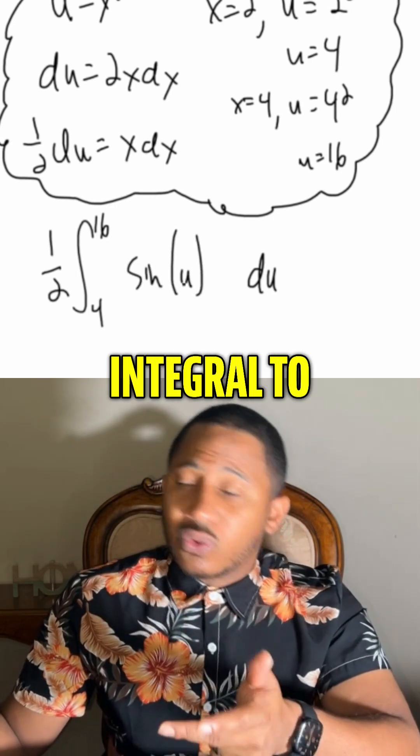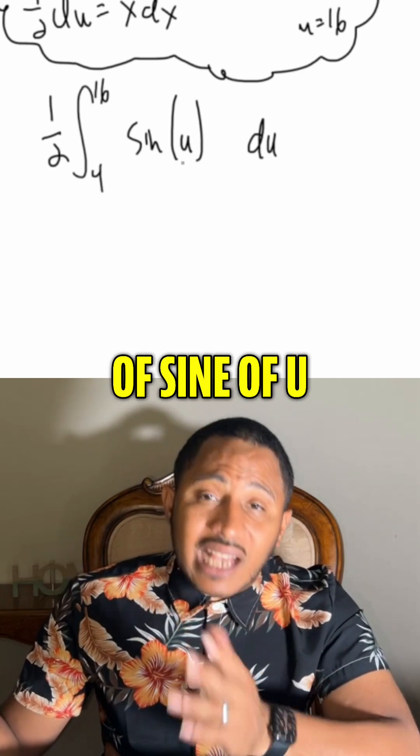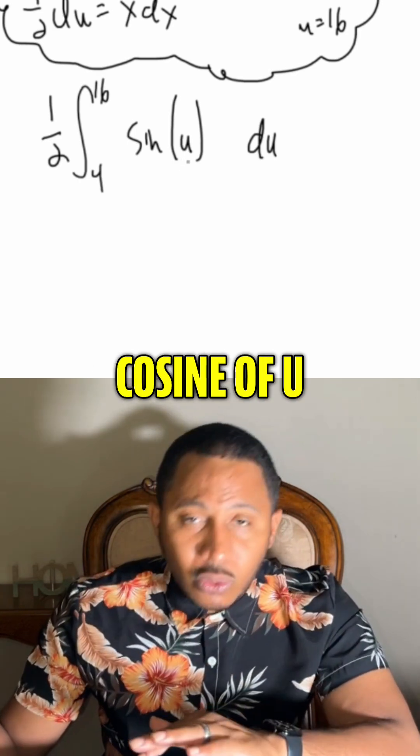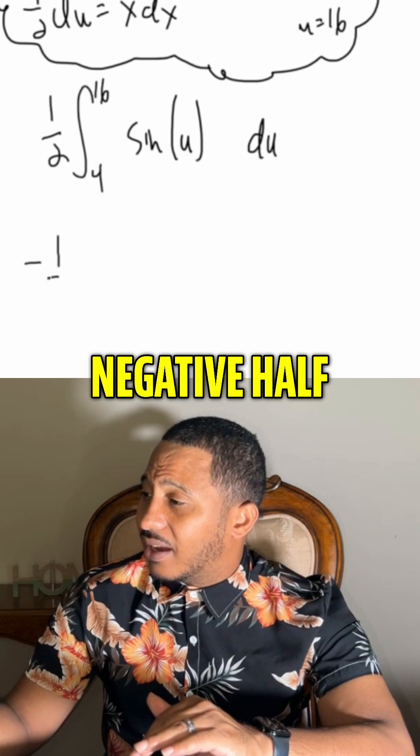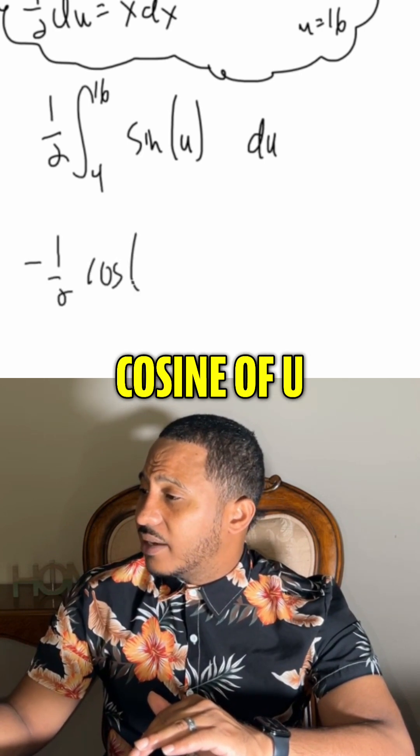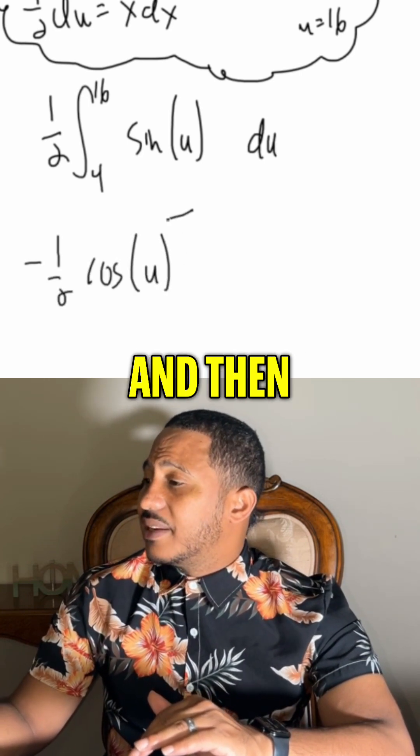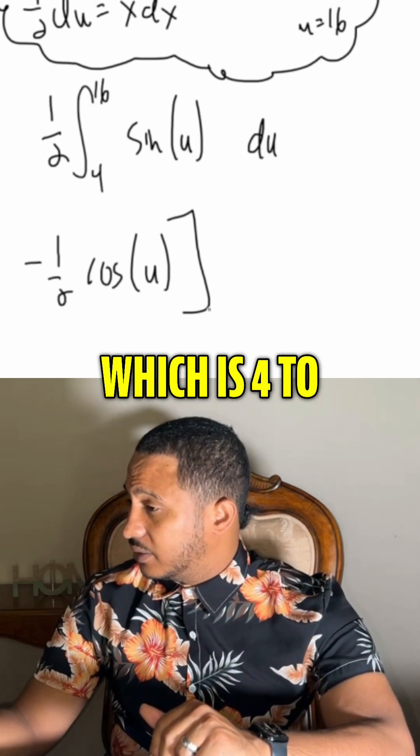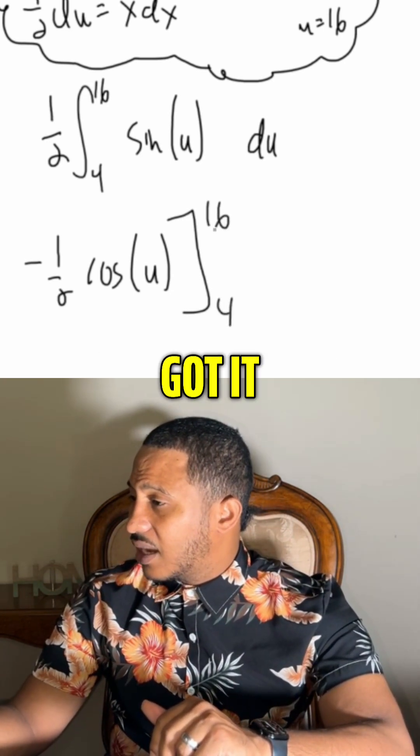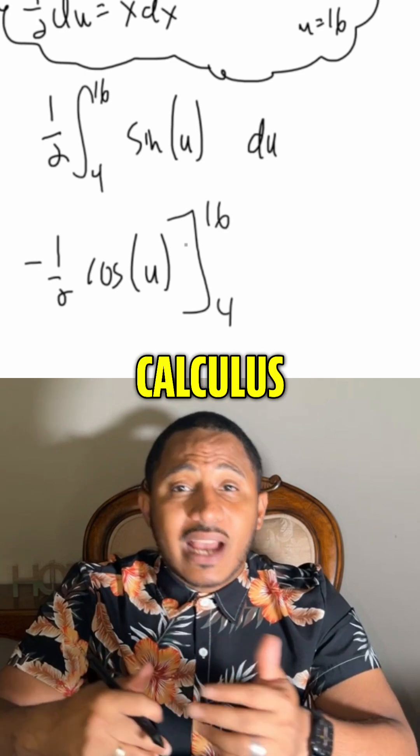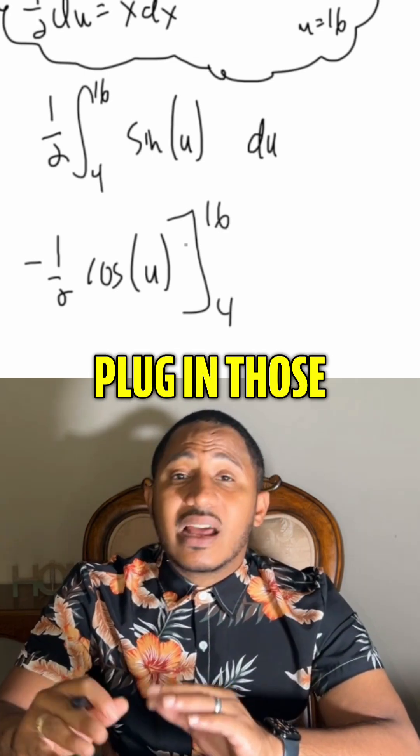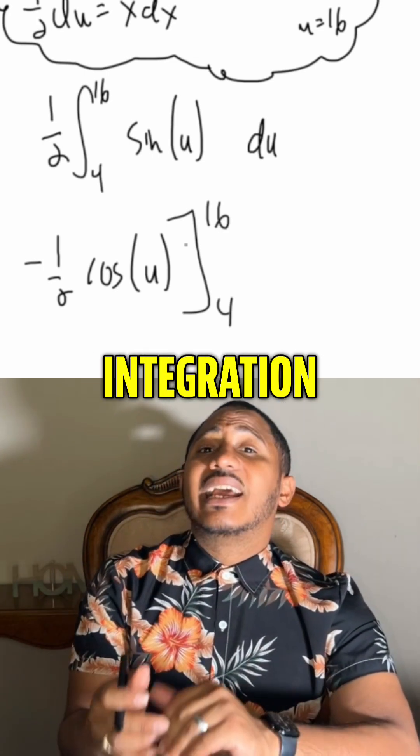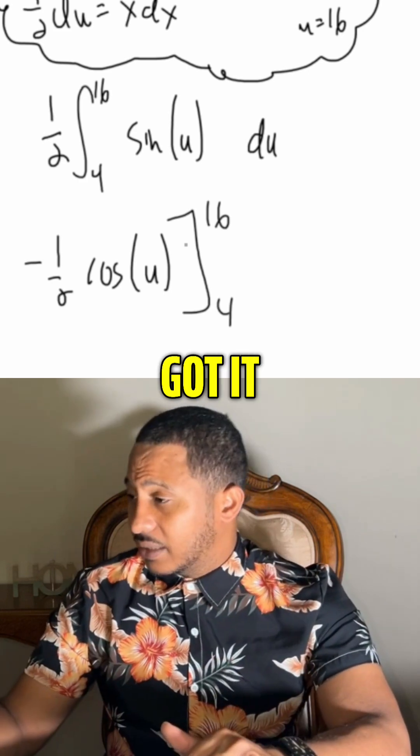Now it's like easier integral to integrate. So the integral of sine of u is negative cosine of u. So this gives us negative half of the cosine of u. And then now we have our new limits of integration, which is 4 to 16. Because of our fundamental theorem of calculus, we know we can plug in those limits of integration into that indefinite integral.